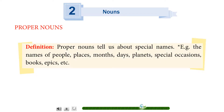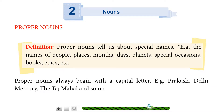Proper nouns. Definition: Proper nouns tell us about special names, for example the names of people, places, months, days, planets, special occasions, books, epics, etc. Proper nouns always begin with a capital letter. For example: Prakash, Delhi, Mercury, Taj Mahal and so on.